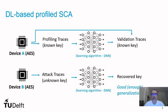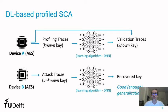Deep learning-based profiled SCA follows the same principle of classical profiled attacks, such as template attacks, where we assume an attacker has full control of a device A, where he can learn the leakage from it. The difference is that the learning method is a deep neural network where the attacker uses profiling traces with known key information to train it, and then validates with traces with known keys, until achieving good generalization that is used against a device B, from where the attacker collects another set of traces. If the model trained with device A provides good enough generalization, the attacker is able to recover the key from device B.